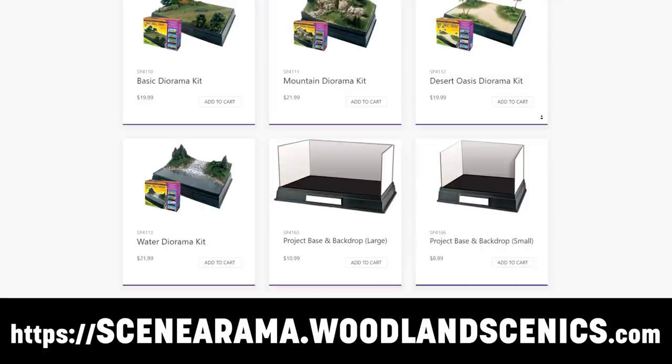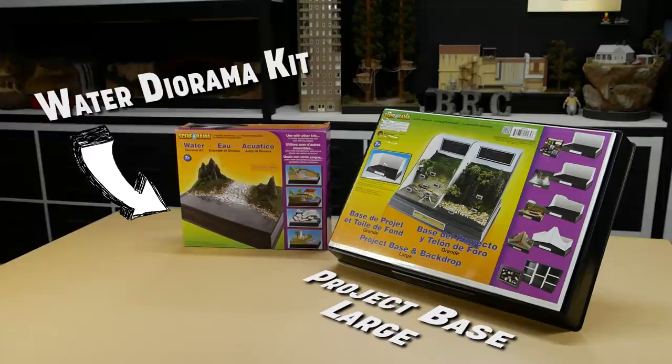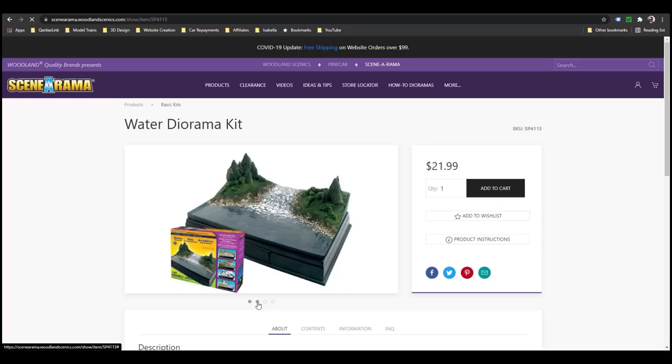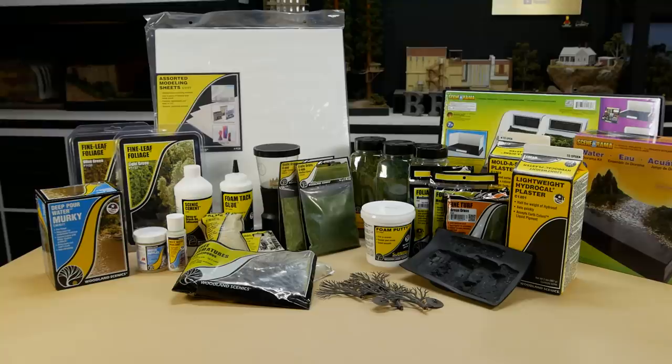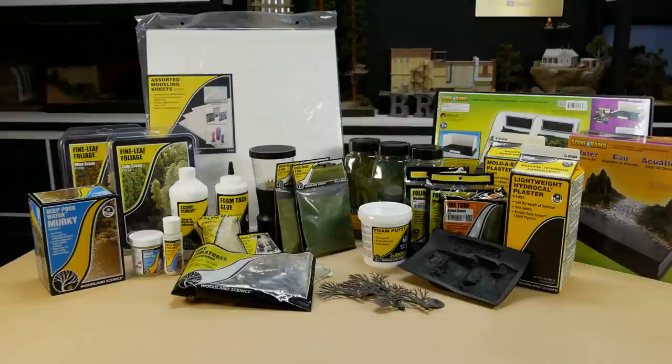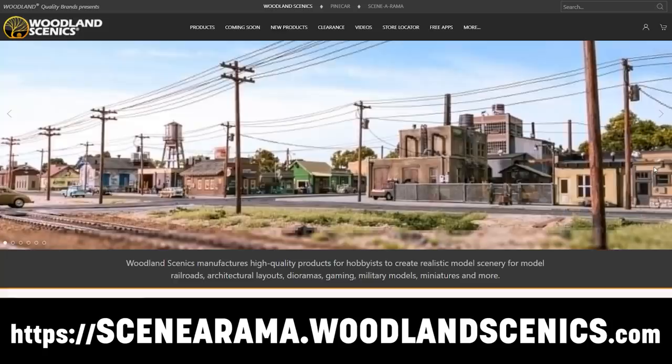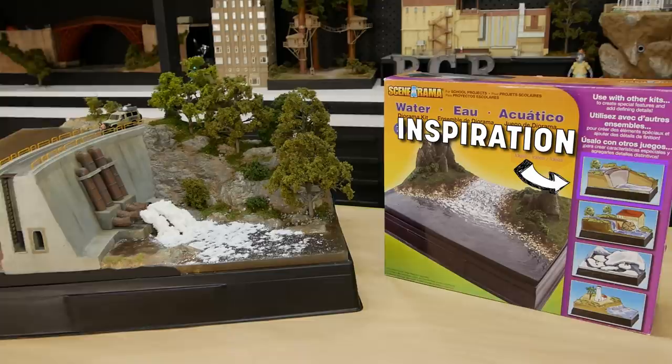This video is sponsored by Scenorama. Scenorama have a large range of diorama kits perfect for anyone wanting to create a unique model and need a good foundation to start with. For this build I'm using the water diorama kit. It comes with the basic scenery material you need to get started but when you supplement those materials with a range of products from Woodland Scenics you can really create something amazing. If you want to check out the full range of products you can visit scenorama.woodlandscenics.com.